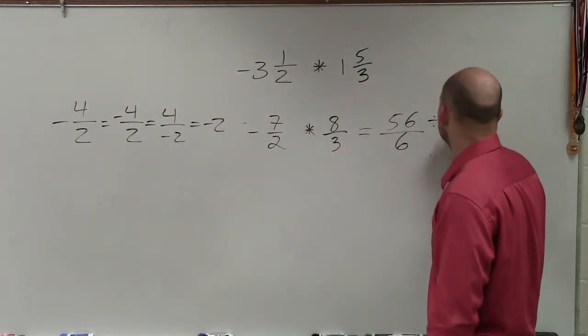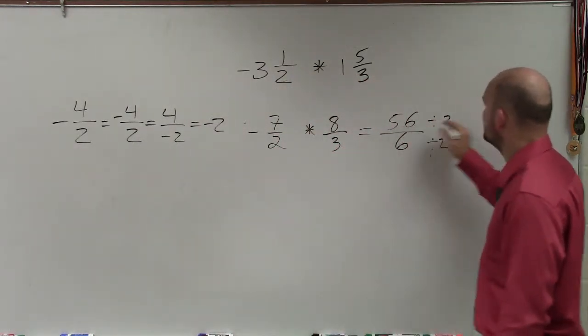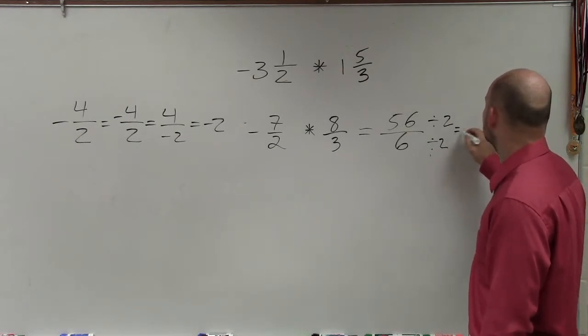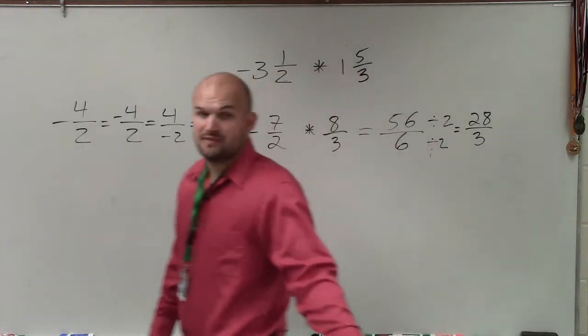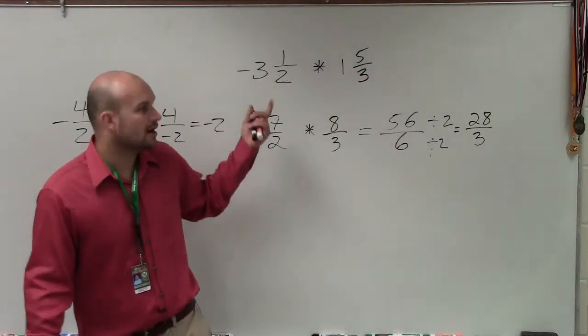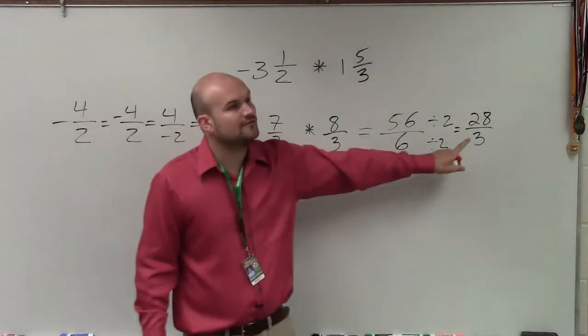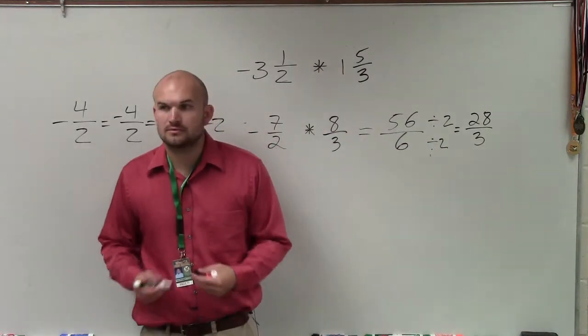So let's just divide by 2 on both sides. So 56 divided by 2 is going to equal 28 over 3. Now does 3 divide into 28 evenly? No, it goes into 27, right? So therefore, that would be your simplified fraction.